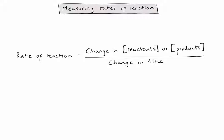So the ideal units for rates of reaction would be moles per decimetre cubed per second. And I could write that on one line like this.